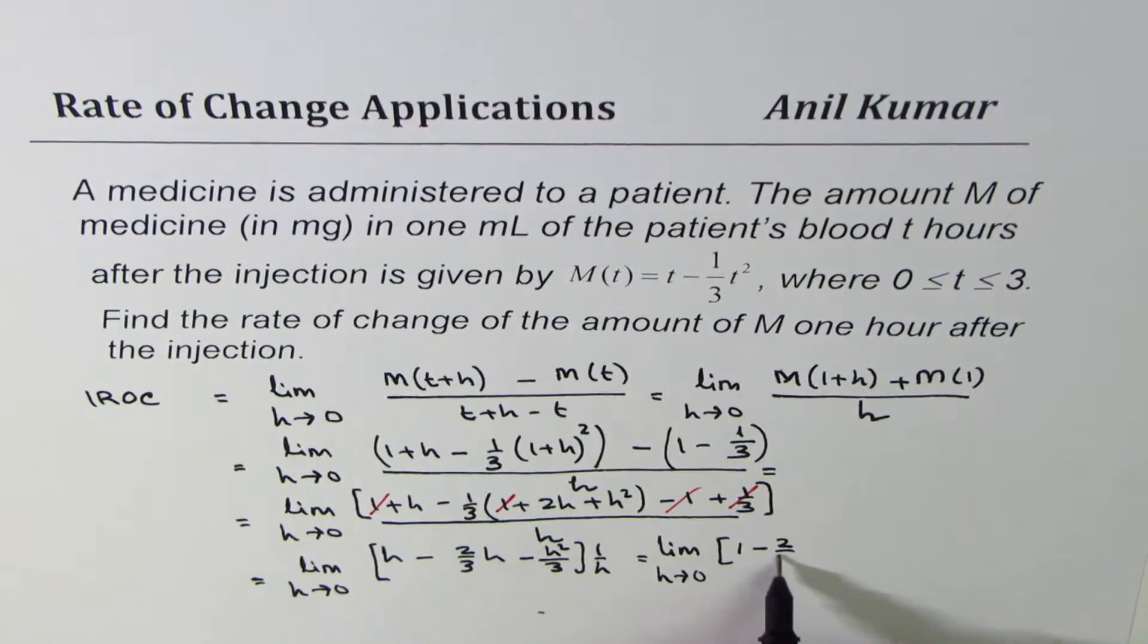So this h can get cancelled with these, so we get here 1 - 2/3, right? 2/3. h gets cancelled, h gets cancelled, and we're left here with h/3. So minus h/3, is it okay?